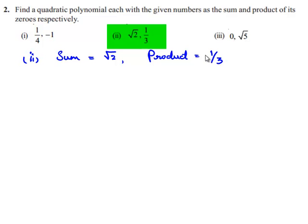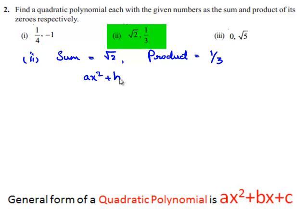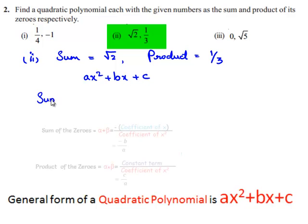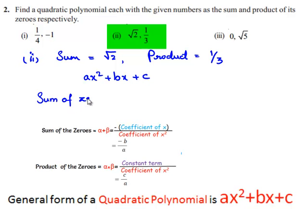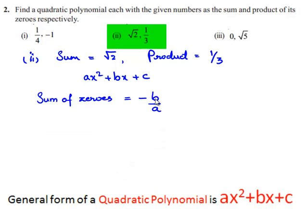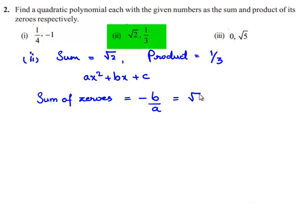Let us assume the required quadratic polynomial to be Ax square plus Bx plus C. We know that sum of zeros is equal to minus B by A, and the given sum of the zeros to us is root 2. This can be written as root 2 by 1. By comparing, we can say B is equal to minus root 2 and A is equal to 1.